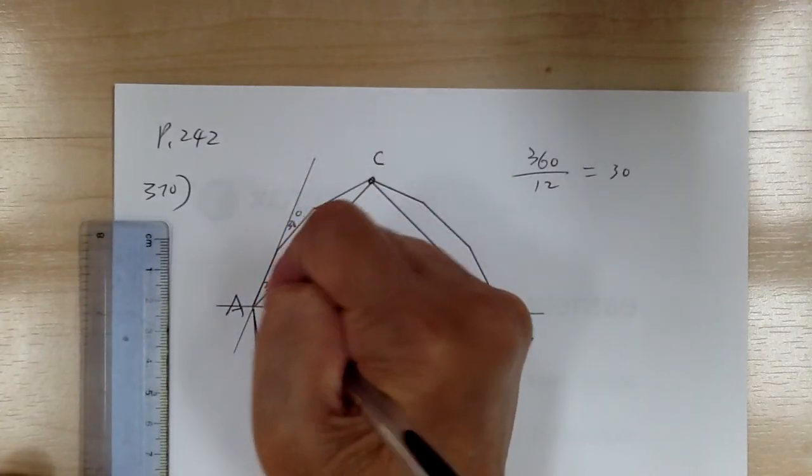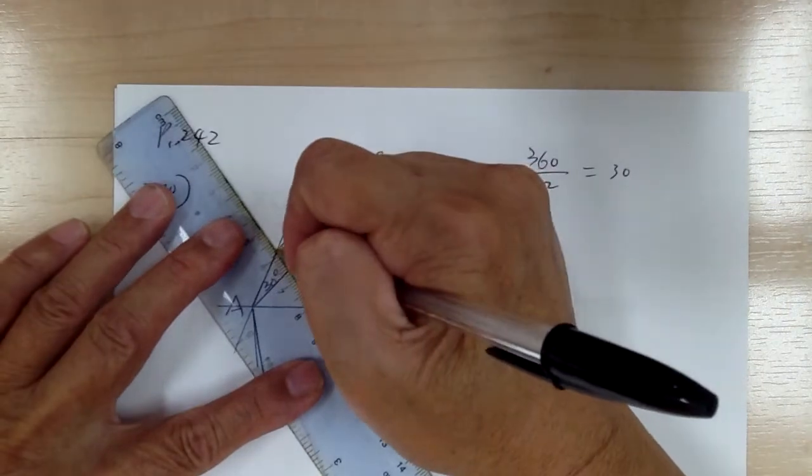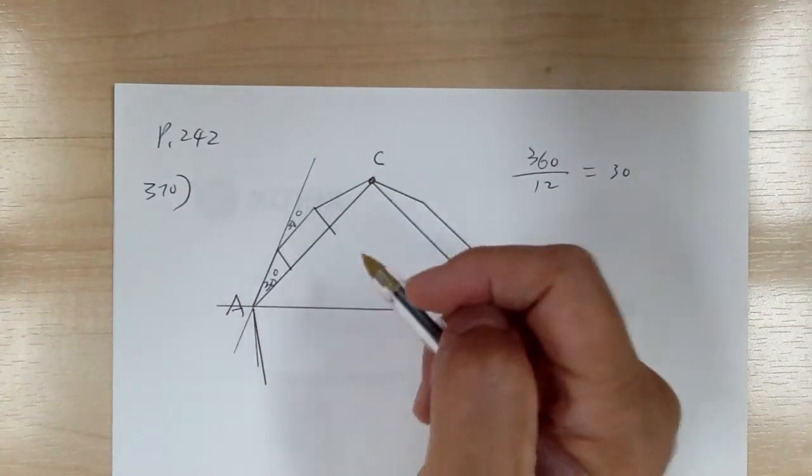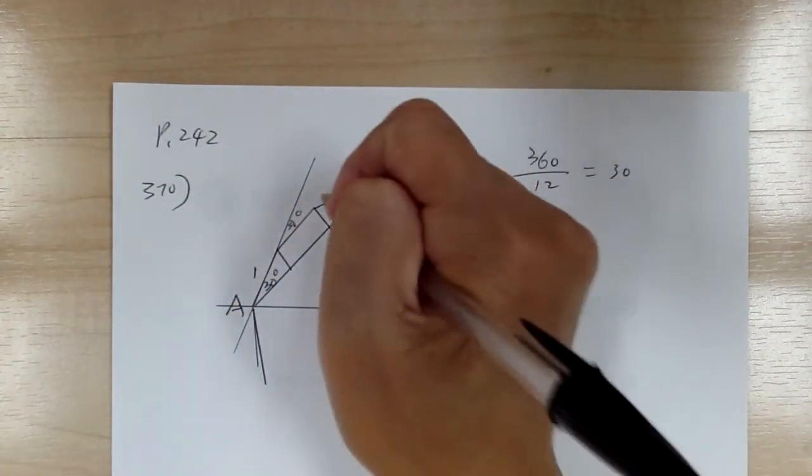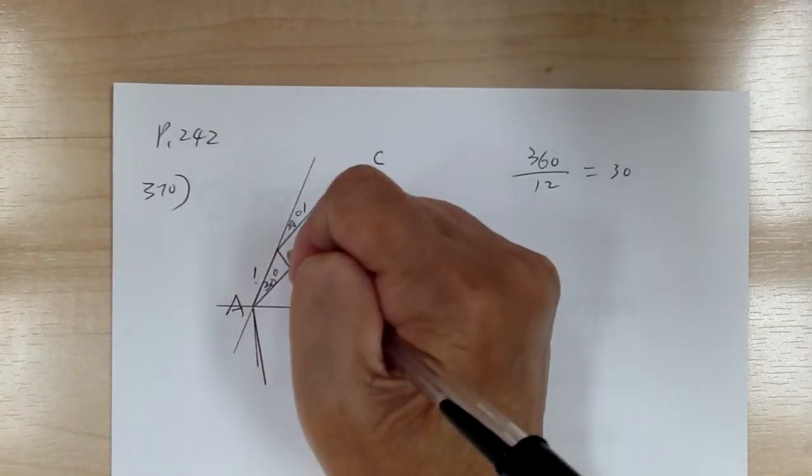So that means this is also 30 degrees. And then what you want to do is cut this into rectangles and triangles. Each side equals one, so this equals one.